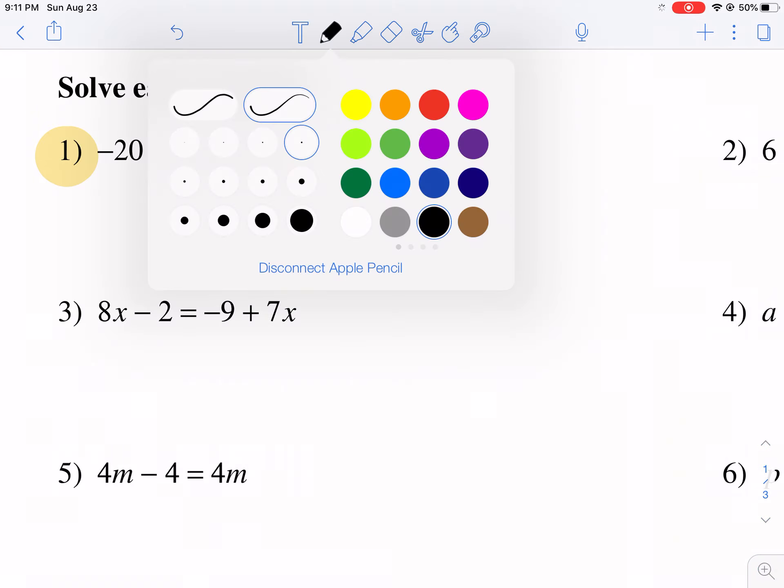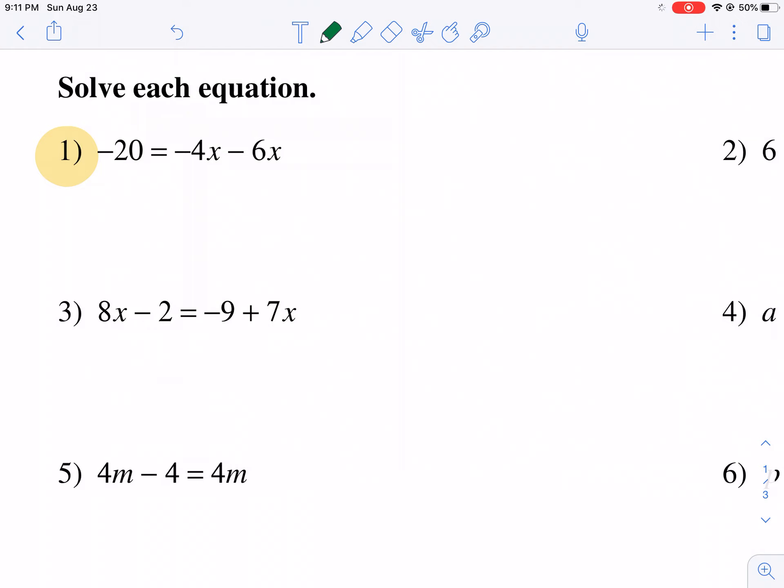And here we have negative 20 equals negative 4x minus 6x. Some people get in such a habit of doing these problems quickly that they might add 6x to both sides, thinking that they have to get this x alone, but they're not even realizing what they're doing. What they need to do is they need to first combine all the terms that are possible on each side of the equal sign. So here we can recognize that obviously the 20 is already by itself. There's nothing to do there. But the negative 4x and negative 6x can be combined.